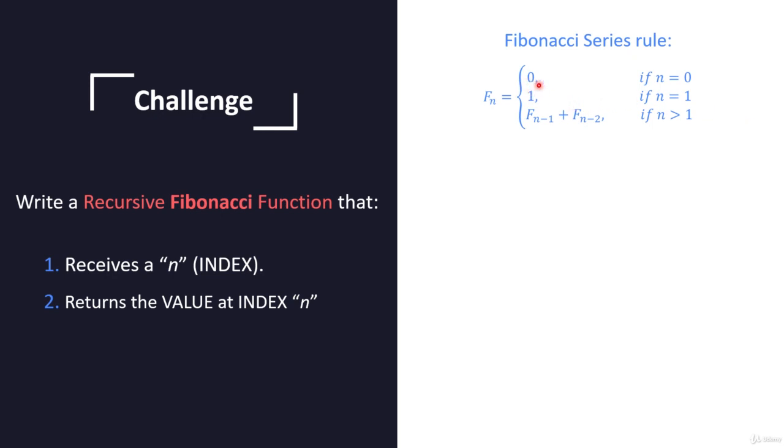So for example, we know that the first element is zero, then we have one, and then we have the F for n equals two. We can see the formula if n is greater than one. So F of two equals F of one, which is one, plus F of zero, which is zero. And it will give us a total of one.